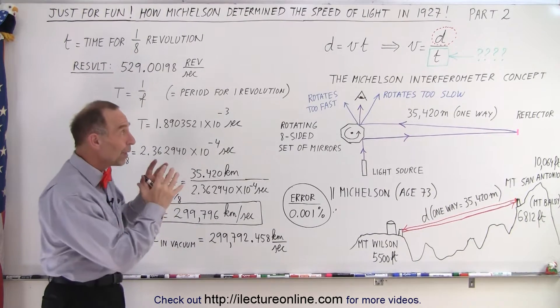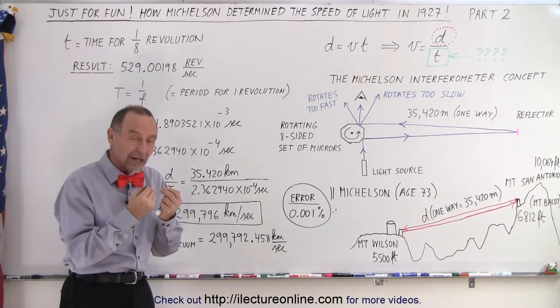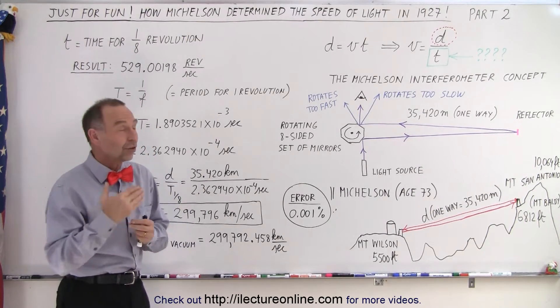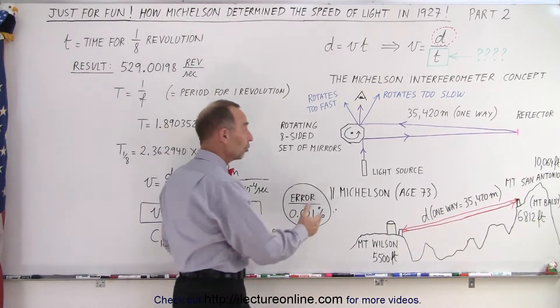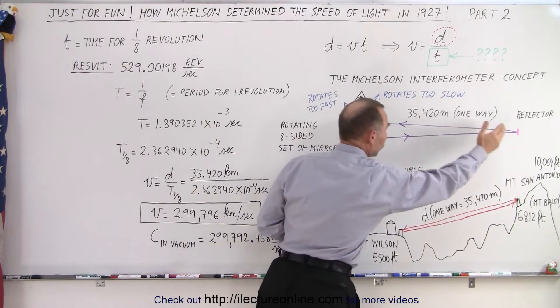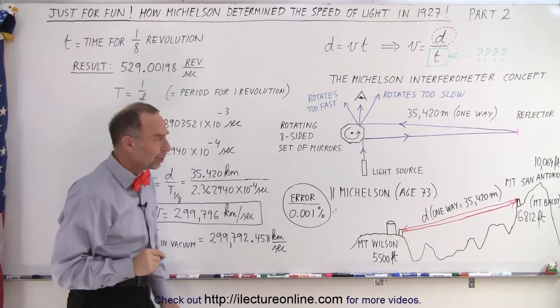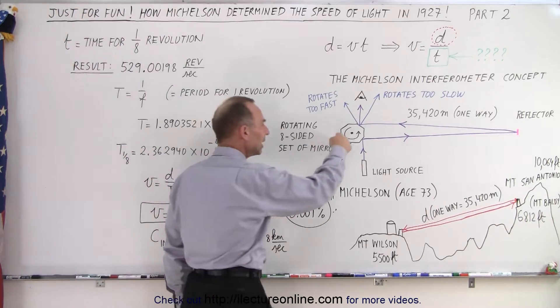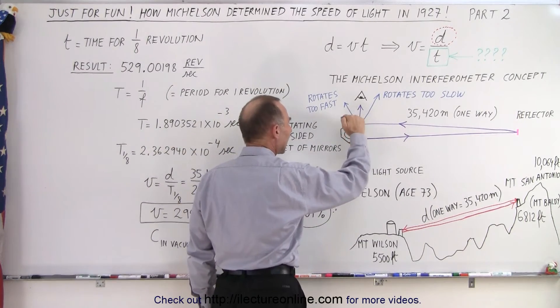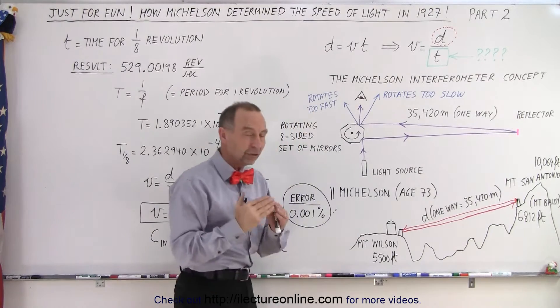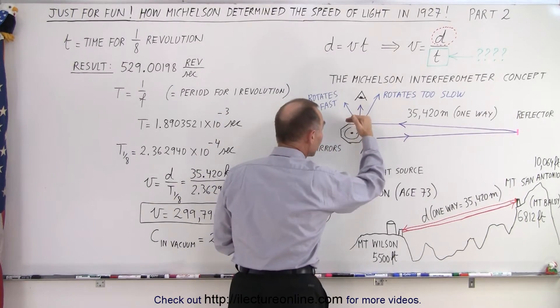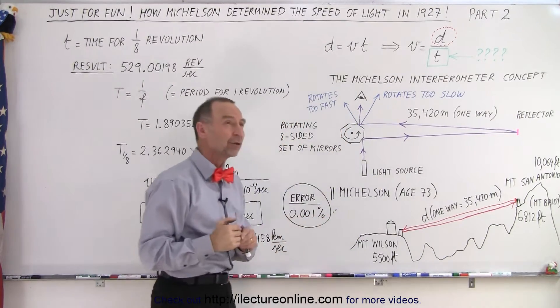And Mickelson, who had built an interferometer, figured out an incredible way to measure the time that it took for the light to go from Mount Wilson to Mount Baldy and back to Mount Wilson. So how did they do that? They had a rotating object to which they attached eight mirrors, and the angle between each mirror was exactly 45 degrees.